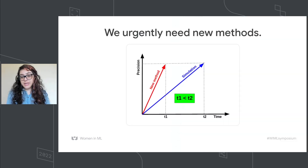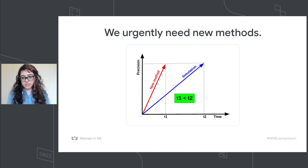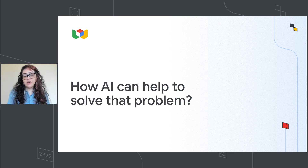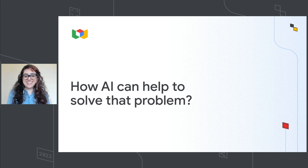The new tools and methods need to have the same precision but with less time than the traditional ones. This is the main condition for simulating black holes. This question came up when I was starting my master's degree: how can AI help solve that problem? As we've seen today, AI can help a lot.